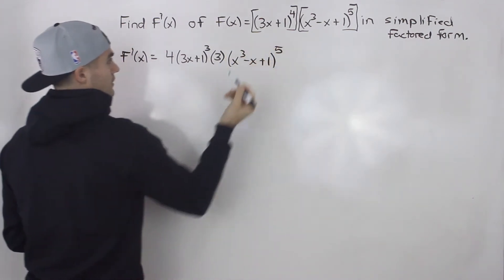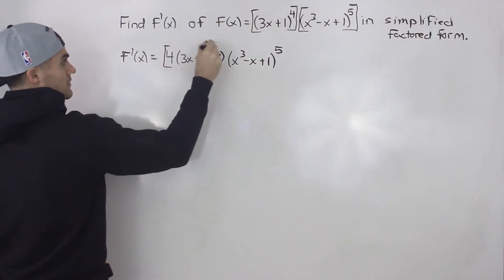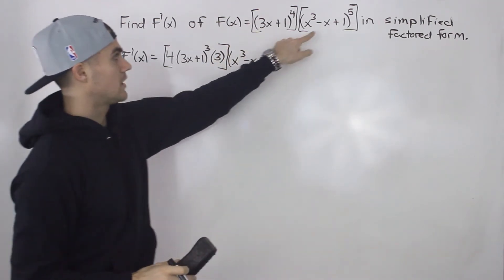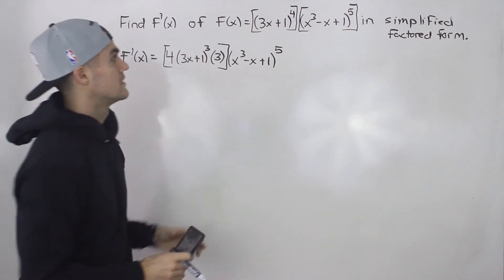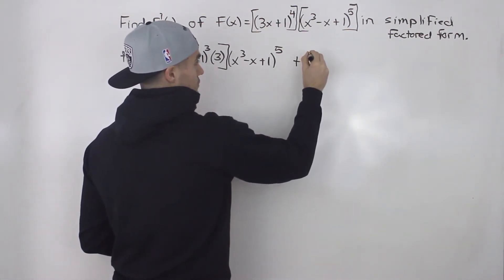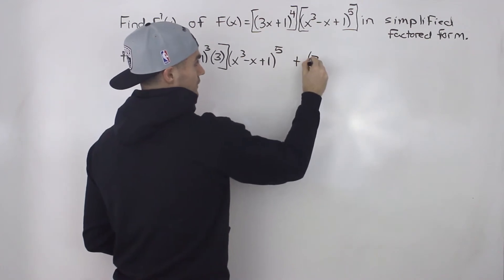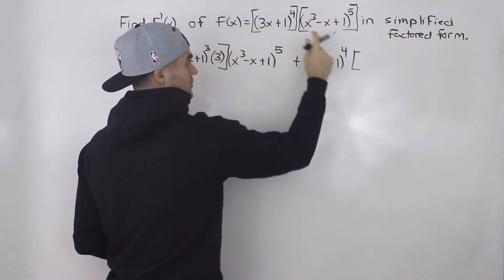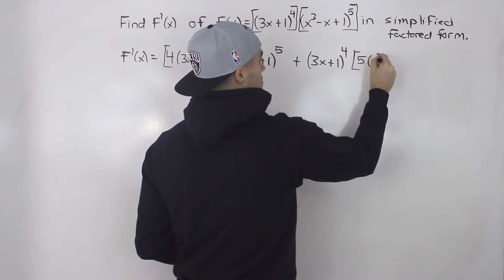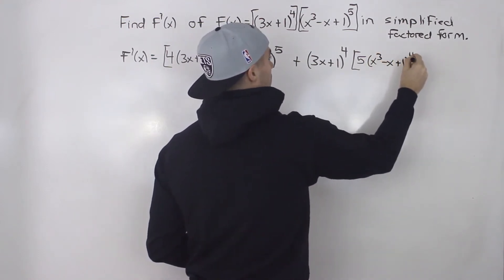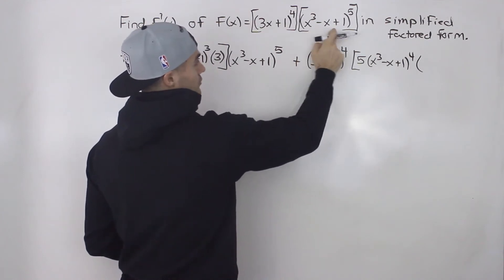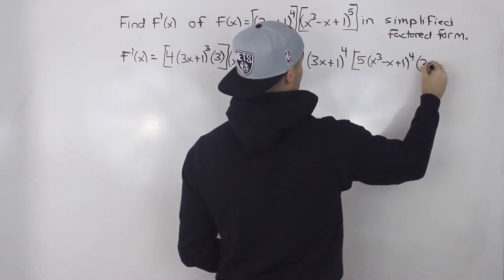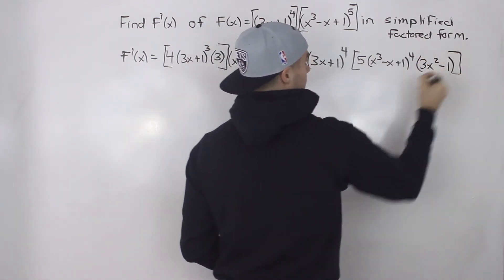We're applying the product rule: that bracket represents the derivative of the first function multiplied by the second function left as is. Then we add the first function left as is, multiplied by the derivative of the second function. For that derivative, we bring the 5 down, giving x cubed minus x plus 1 to the power of 4, multiplied by the derivative of the inner function, which is 3x squared minus 1.